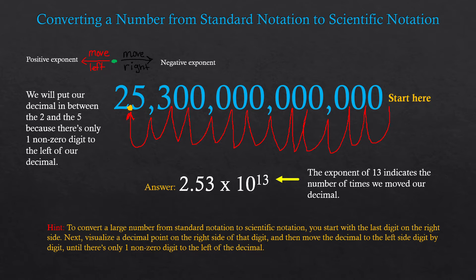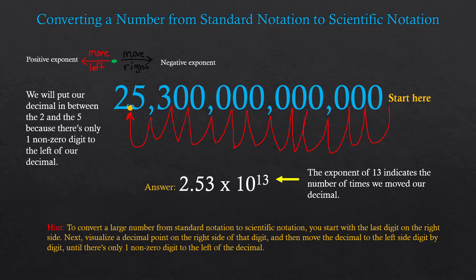Now let's convert from standard to scientific notation. The first thing you do is start with the last digit on the right side — that is the last digit on the right side of the entire number. Now you're going to visualize a decimal point on the right side of this digit, and then move the decimal to the left digit by digit until there's only one non-zero digit to the left of the decimal. A non-zero digit is any whole number that is not zero.